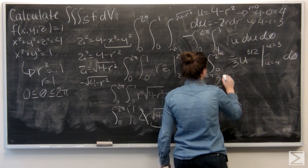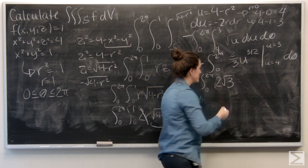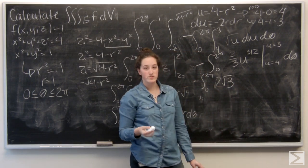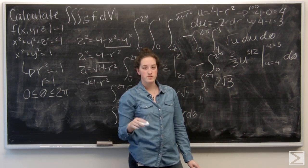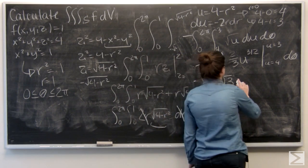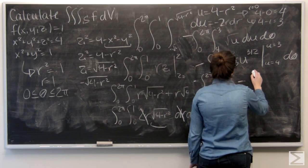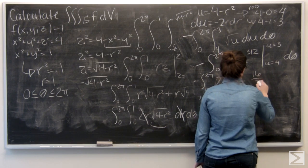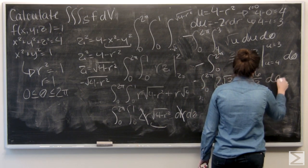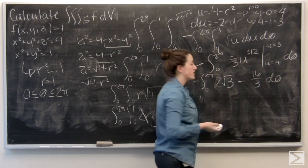To just be 2 root of 3. And now I want to plug in u equals 4. So the square root of 4 is 2, to the third is going to be 8. So minus 16 thirds. And now I'm ready to integrate with respect to theta.